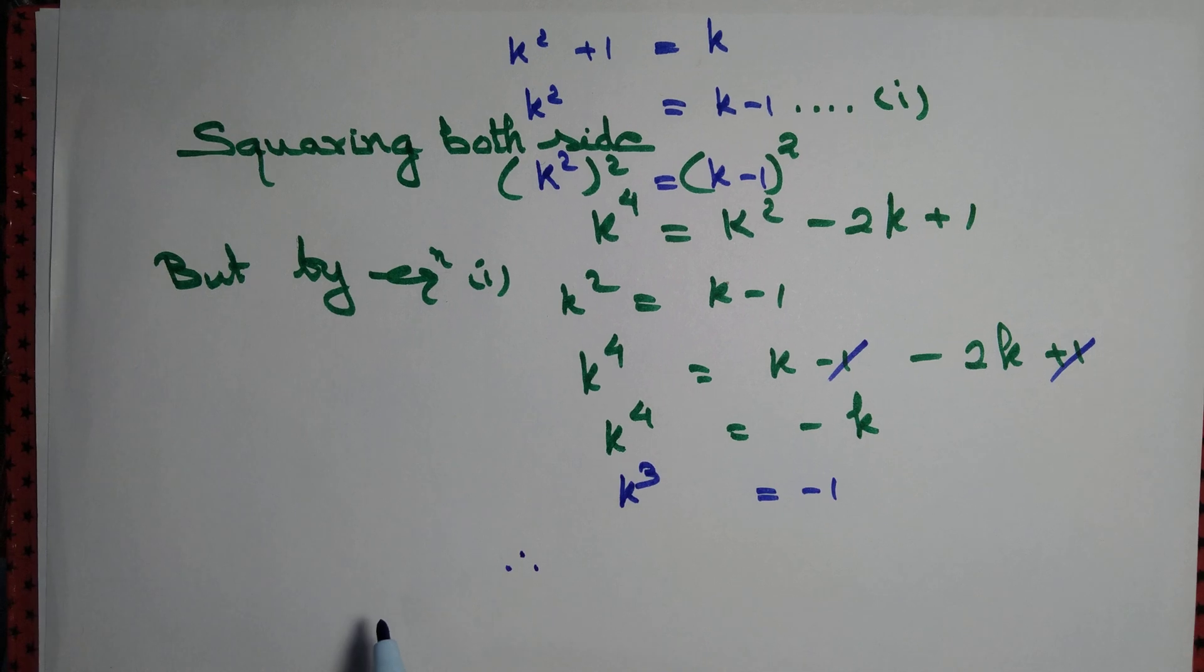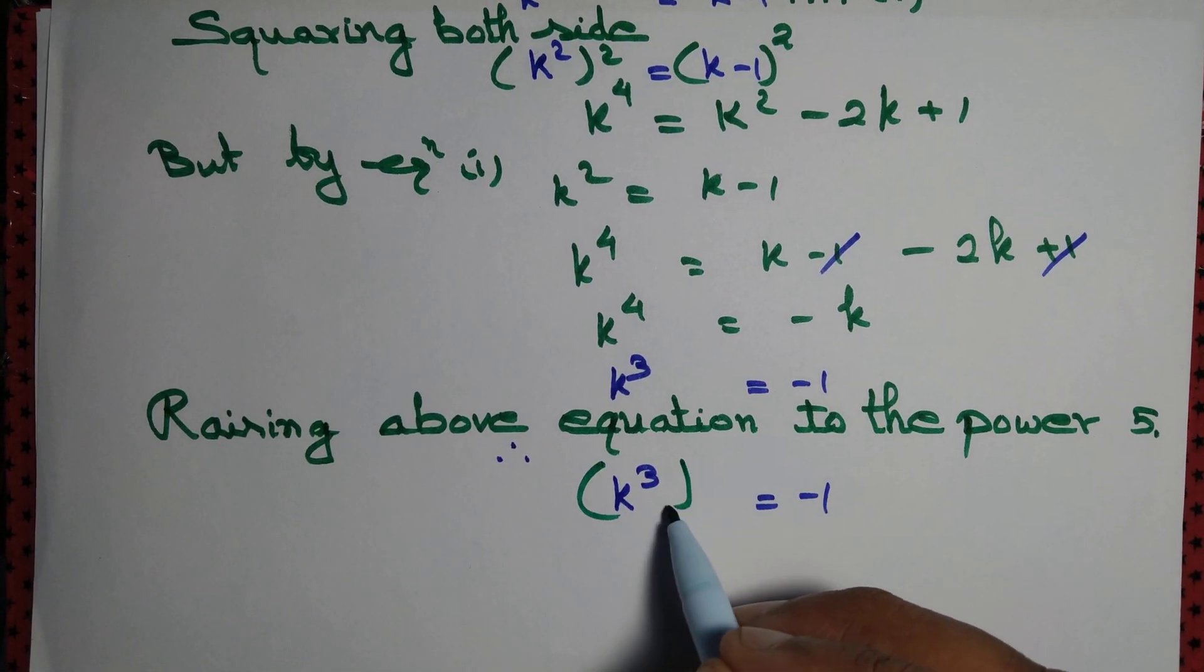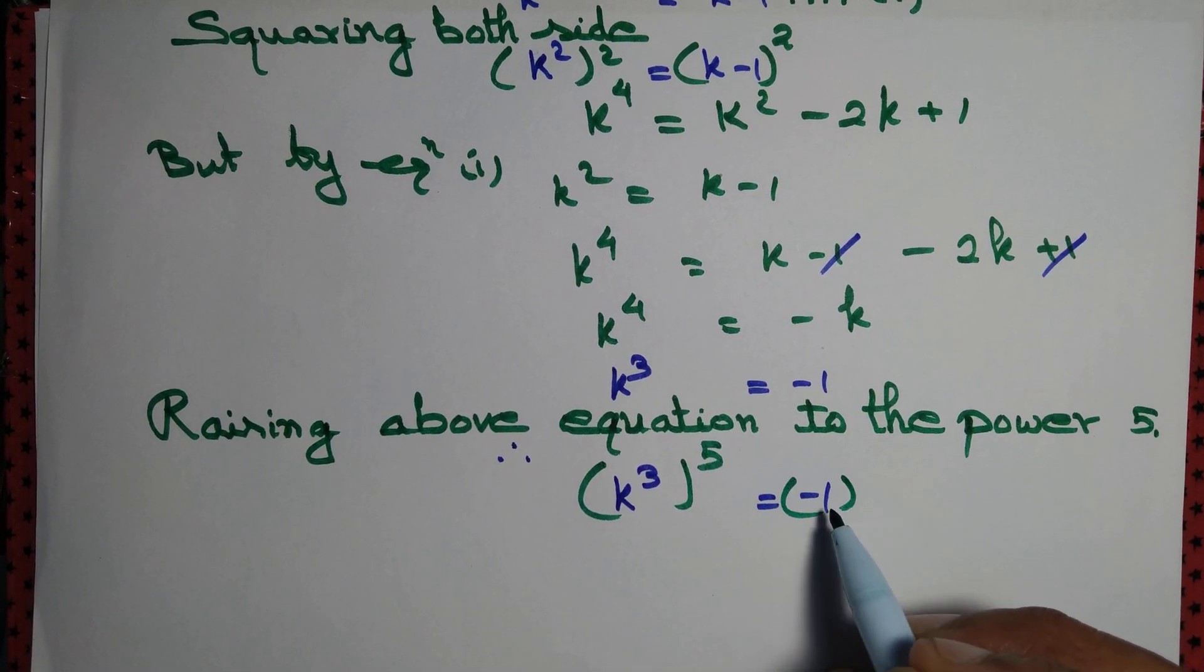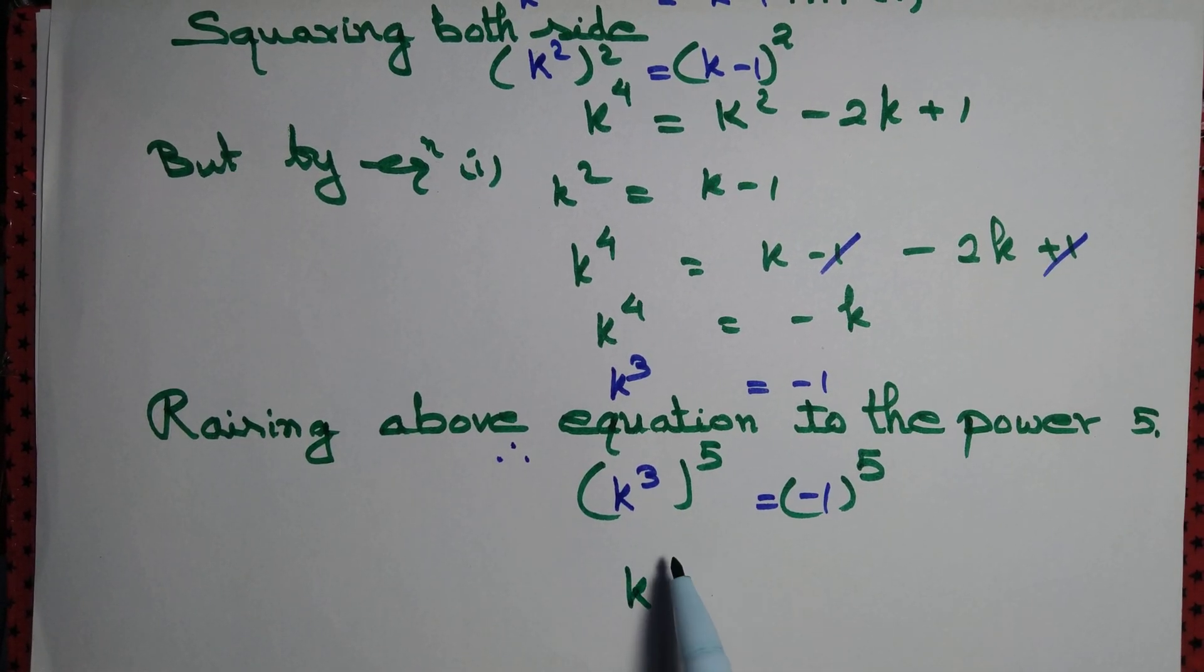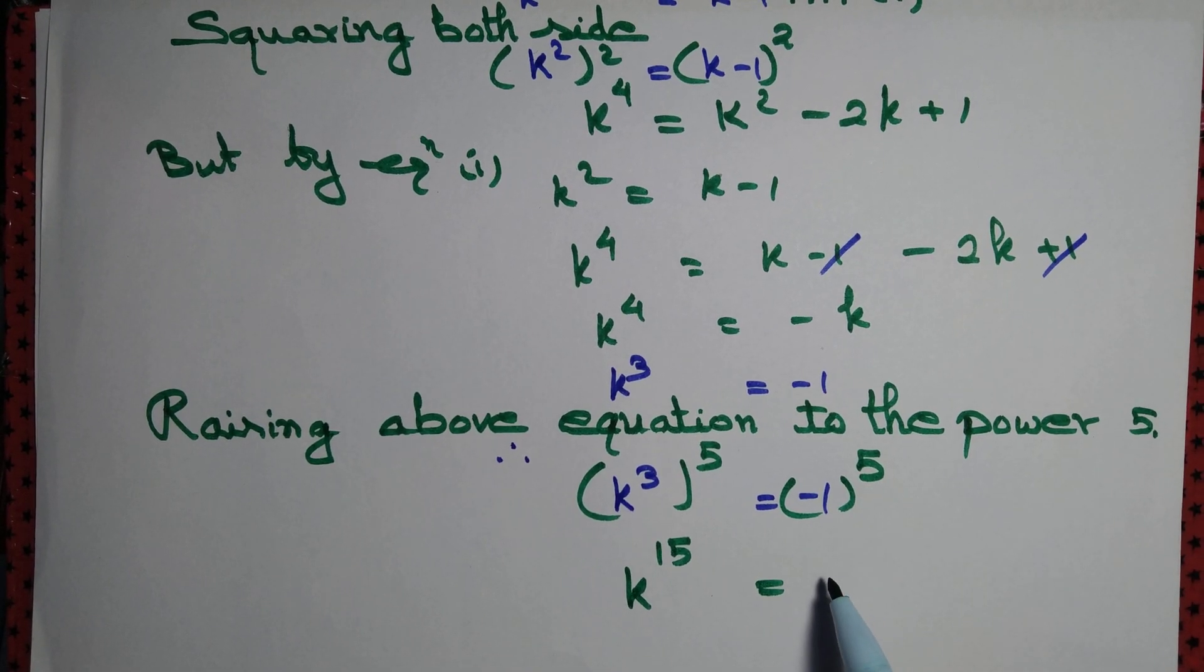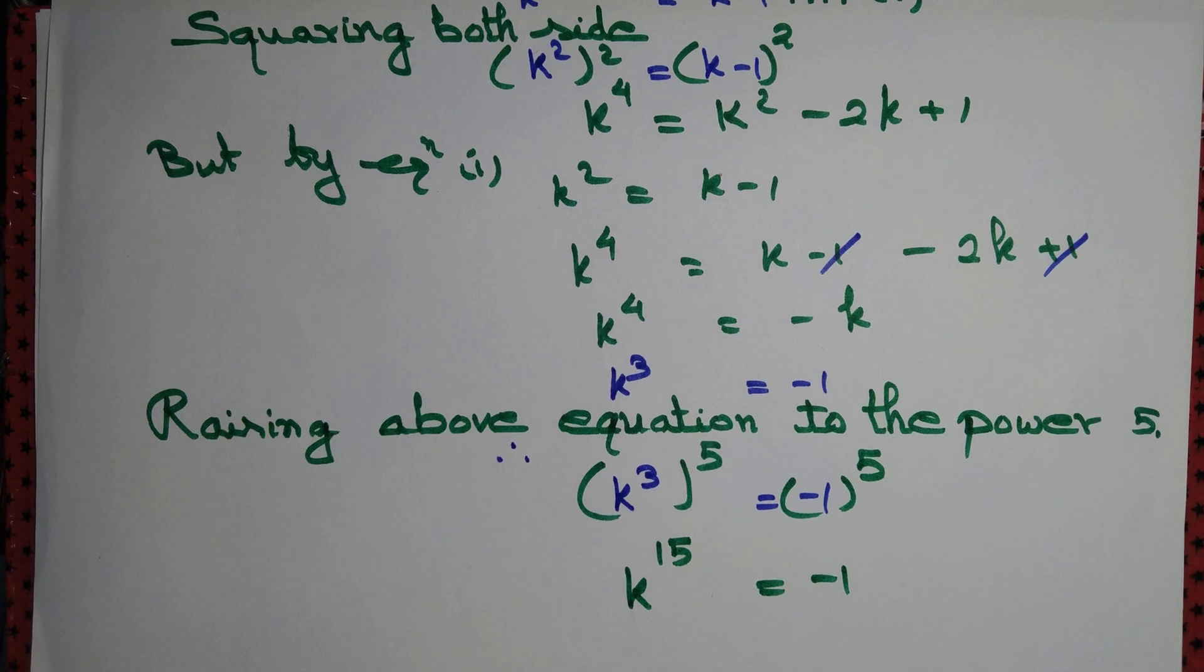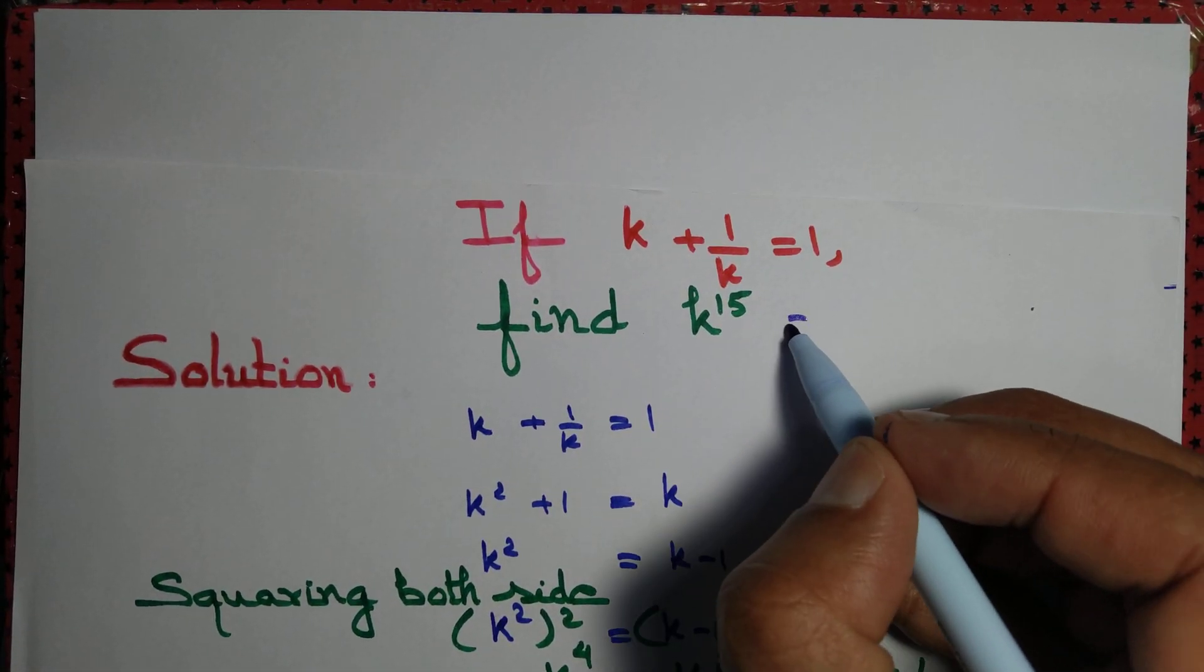Therefore, we raise it to the power 5. We obtain (k³)⁵ equal to (minus 1)⁵. But (k³)⁵ by law of indices is equal to k¹⁵. And (minus 1)⁵ is just minus 1. So we have computed k¹⁵ equal to minus 1.